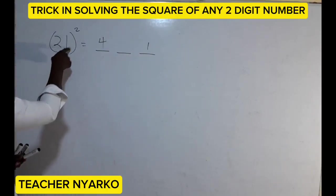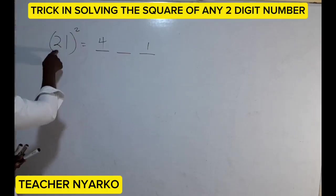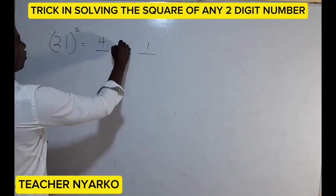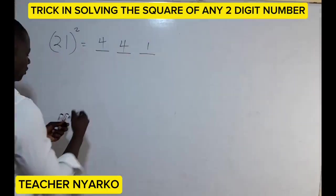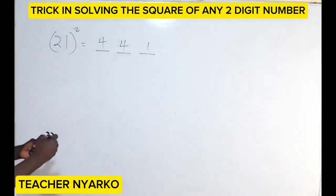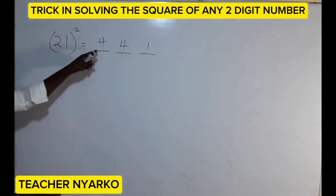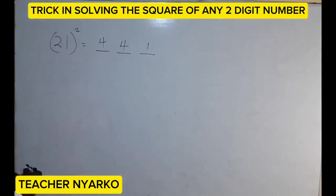Then you multiply the first term by the second term by the exponent: two times one is two, and two times two is four. So you have four hundred and forty-one. Twenty-one squared is equal to 441.